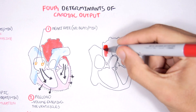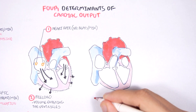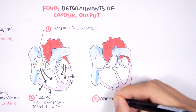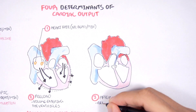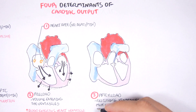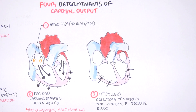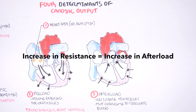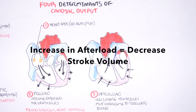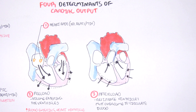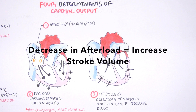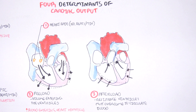The third determinant of cardiac output is afterload, which is the resistance the ventricles must overcome to pump blood around the body. If someone has high aortic pressure, the afterload would increase, because an increase in resistance means an increase in afterload. An increase in afterload means a decrease in stroke volume; a decrease in afterload means an increase in stroke volume — all of which influences cardiac output.